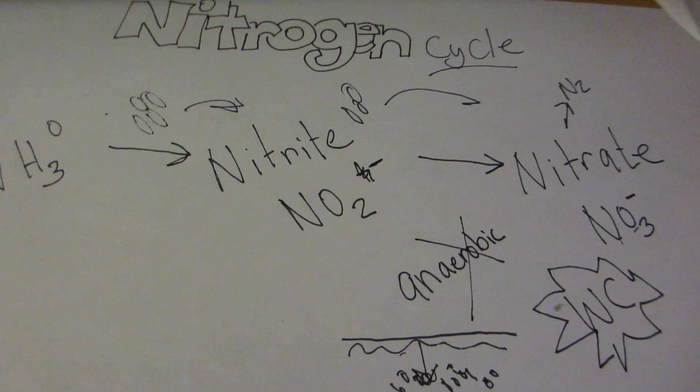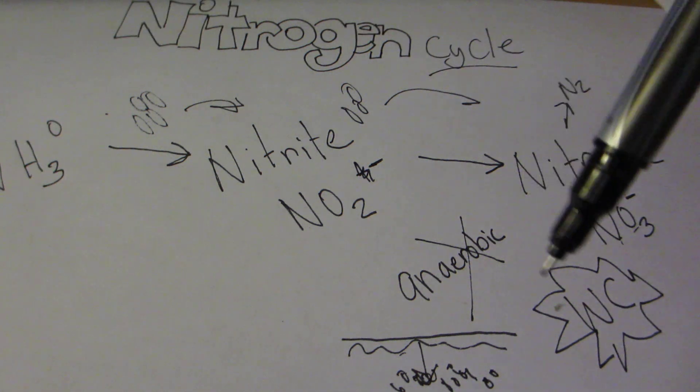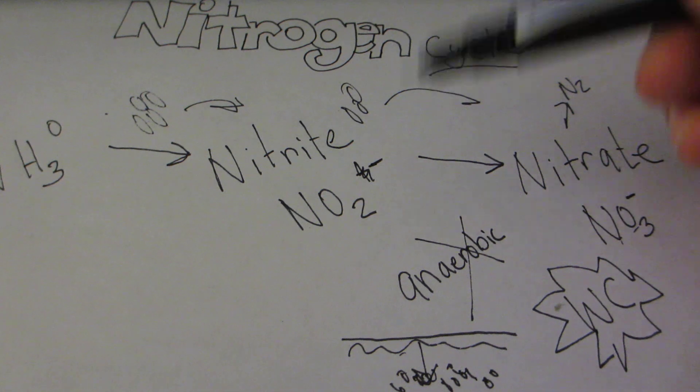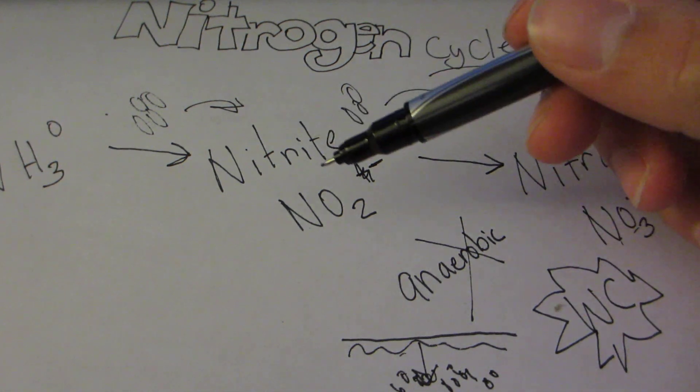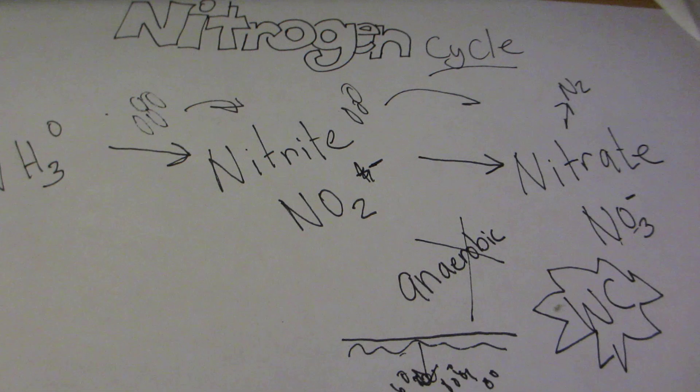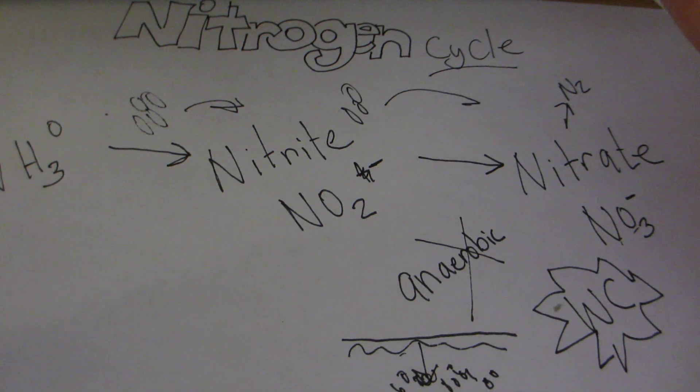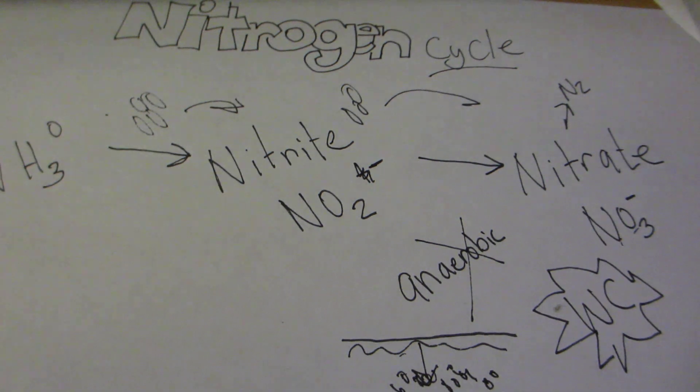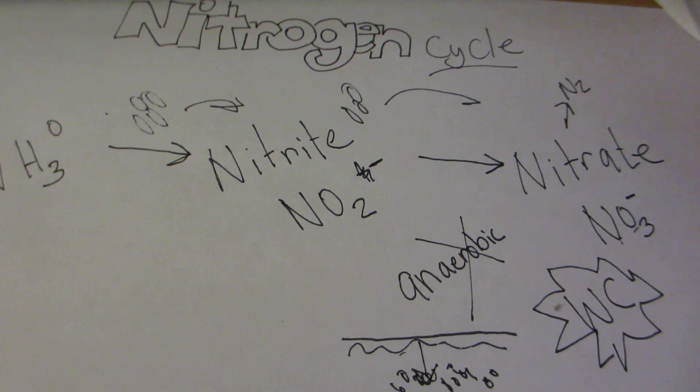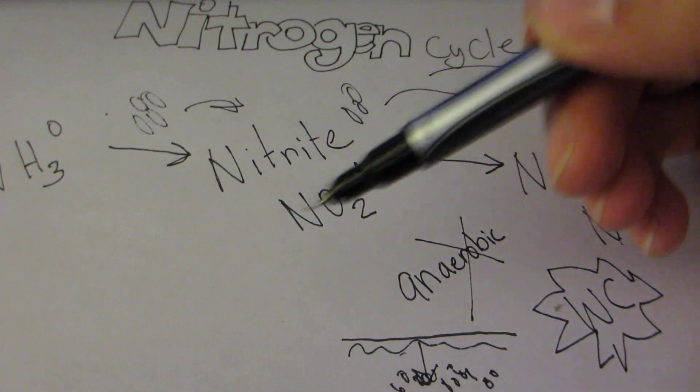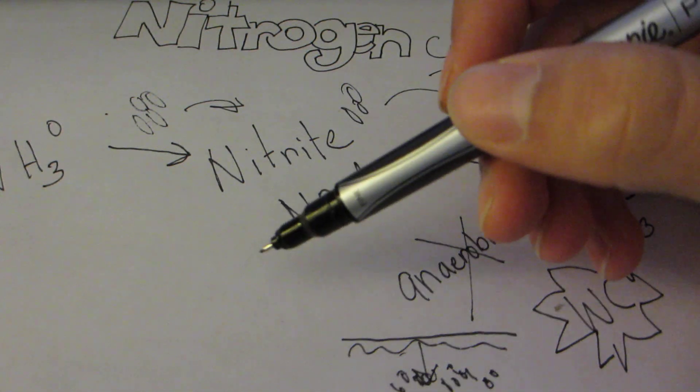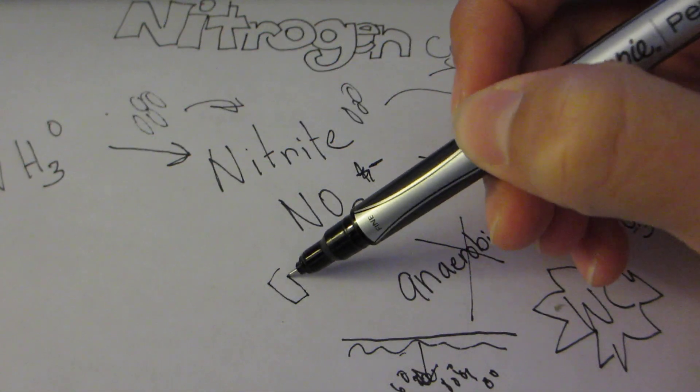What you have is a filter, possibly a canister filter or a HOB. You're going to want mechanical filtration to get rid of particles and keep your water clean, chemical filtration like carbon to get rid of tannins, and biofiltration, which is my favorite kind of filtration because it's really cool.